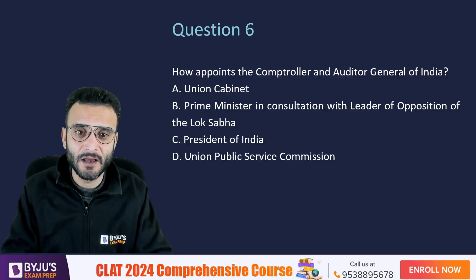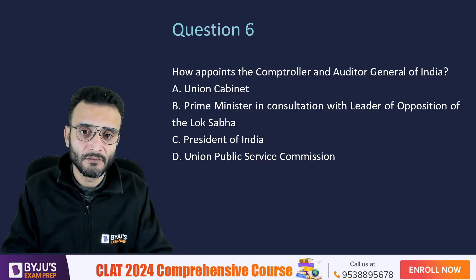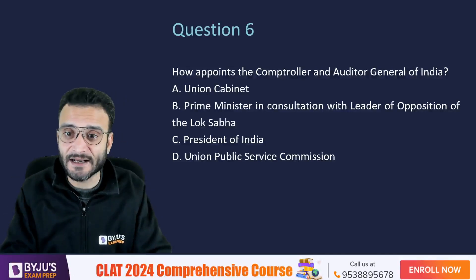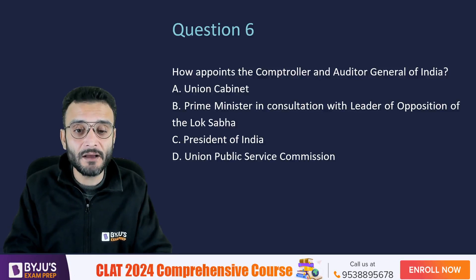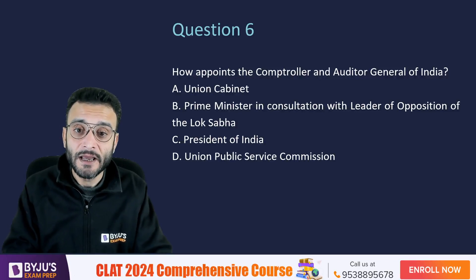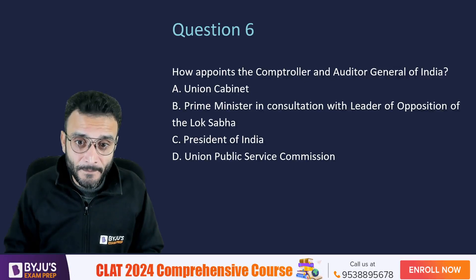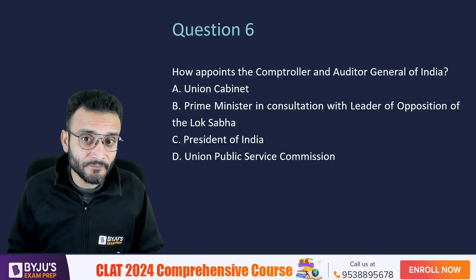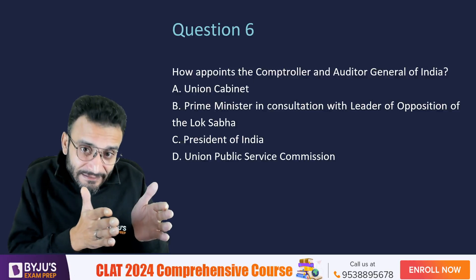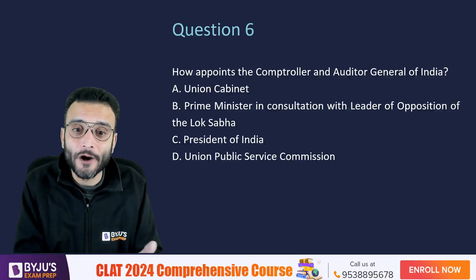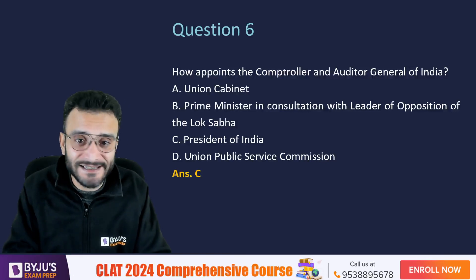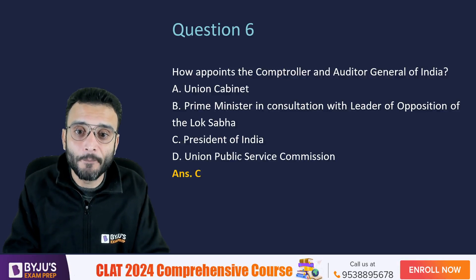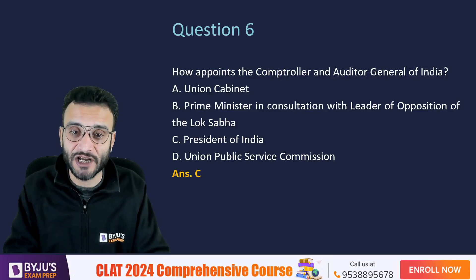Moving on to question number 6: who appoints the Comptroller and Auditor General of India? Is it the Union Cabinet, the Prime Minister in consultation with the leader of opposition in the Lok Sabha, the President of India, or the Union Public Service Commission? The Comptroller and Auditor General of India is a constitutional authority appointed by the President of India — the correct answer is option C.